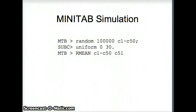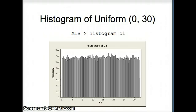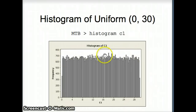In our discussion, N refers to the number of items used to construct our average. In this case, we used 50 items, so N is 50. C1 is a uniform distribution from 0 through 30 — flat across the top — and that's essentially what we expect to get.